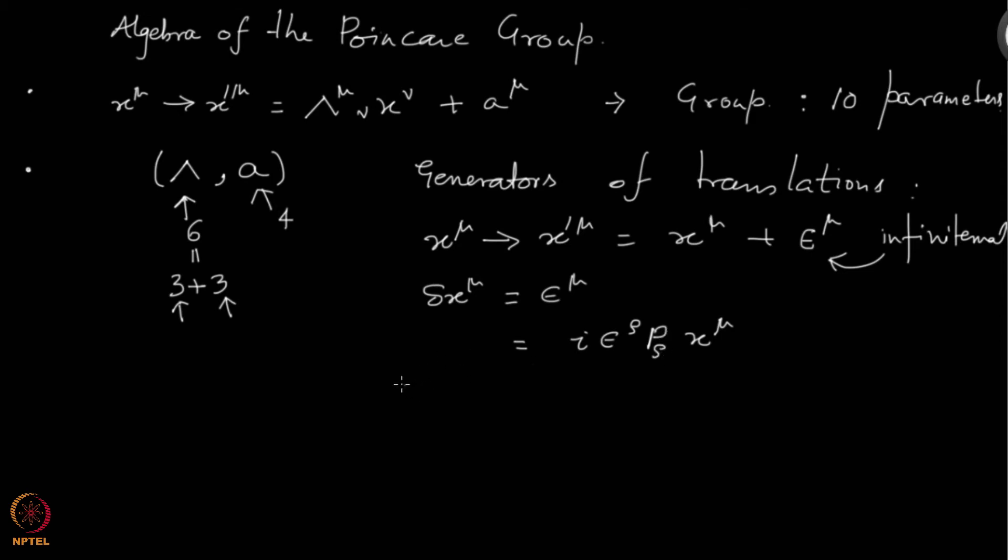You see that this is the generator of translations. This is the parameter and this operator is the one which acts on x mu and gives you the translation. That is the generator of it.